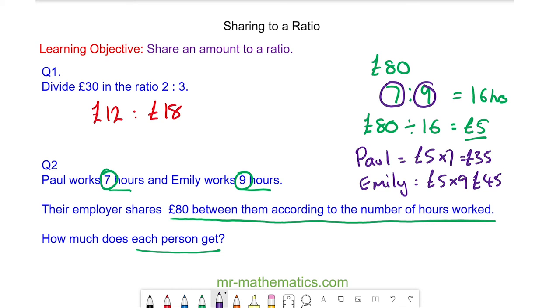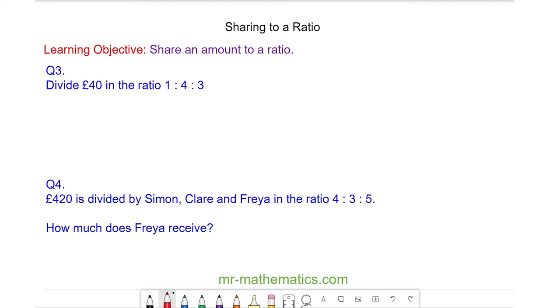Again, we can check that this is right by adding the two amounts together, and £35 and £45 does make £80. Okay, let's try some more questions. Do you want to try question three and four yourself by pausing the video, and you can resume it when you're ready.